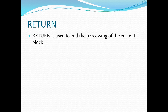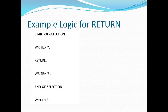Next we are going to check RETURN. RETURN is used to end the processing of the current block. For example, if we have written in startup-of-selection with write A, and write B with RETURN in between, and end-of-selection with write C — unlike STOP, RETURN will not move to end-of-selection after execution. We get output A, and after executing RETURN it will exit the report completely.